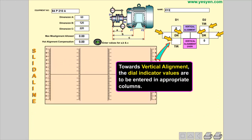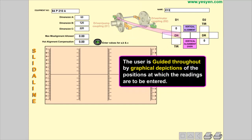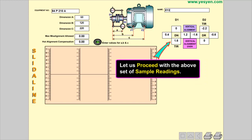Towards vertical alignment, the dial indicator values are to be entered in appropriate columns. The user is guided throughout by graphical depictions of the positions at which the readings are to be entered. Let us proceed with the above set of sample readings.